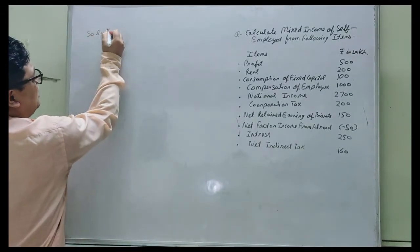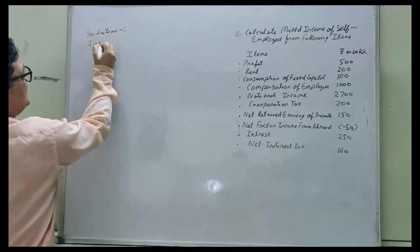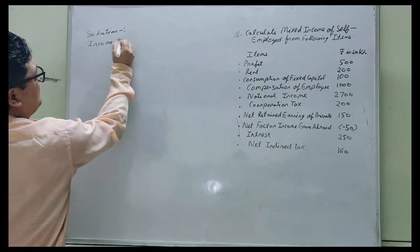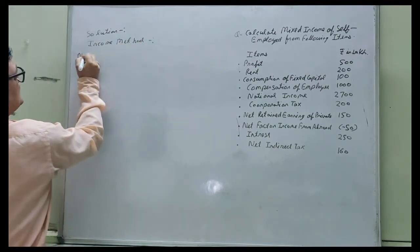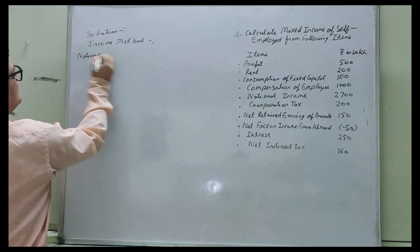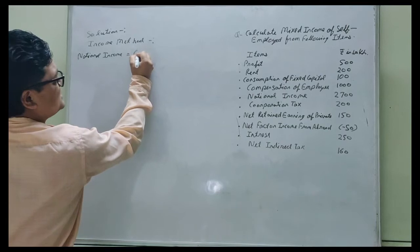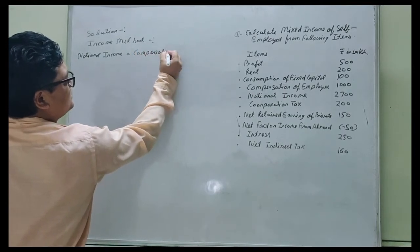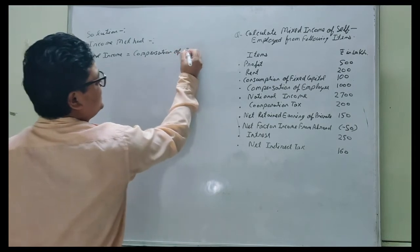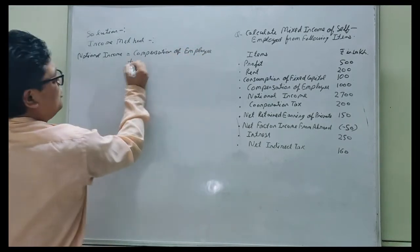As you all know, the formula of national income by income method is: Compensation of employee plus operating surplus.